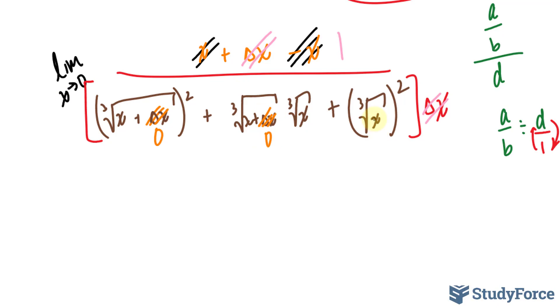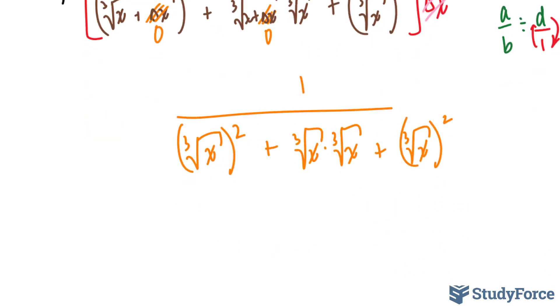We don't need to write down limit anymore because we've taken the limit, 1 over the cube root of x raised to the power of 2 plus the cube root of x times the cube root of x plus the cube root of x raised to the power of 2. Let's see how we can simplify this further.